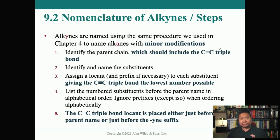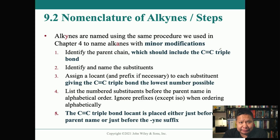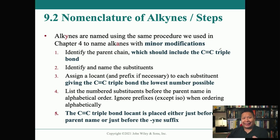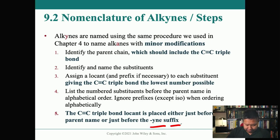Whenever we get introduced to a new functional group, we need to know how to name it. Alkynes are named using the same procedure as Chapter 4 for alkanes, with minor modifications. First, identify the parent chain including the triple bond. Then identify and name the substituents. Assign locants giving the carbon-carbon triple bond the lowest number, just like with alkenes. List substituents before the parent name in alphabetical order, ignoring prefixes except for iso. The triple bond locant is placed just before the parent name. The suffix for alkynes is -yne.